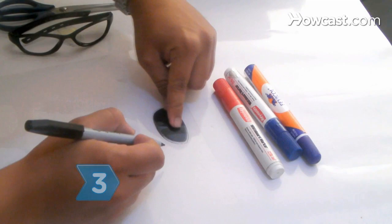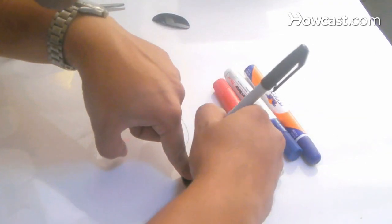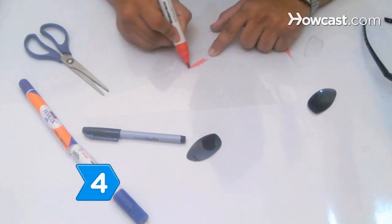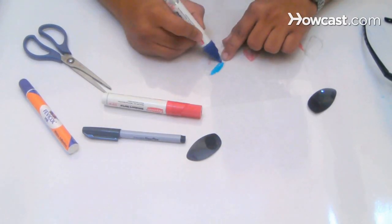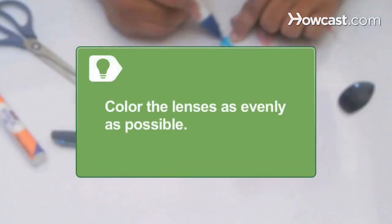Step 3. Make the new lenses by tracing around the old ones on the plastic sheet with a black marker. Step 4. Color one of the new lenses red and the other one cyan. Make sure to color them on just one side, and as evenly as possible. You don't want smudges or smears ruining your 3-D vision.